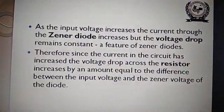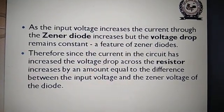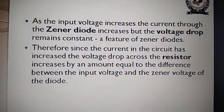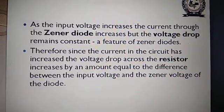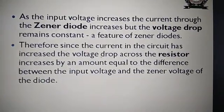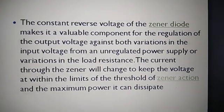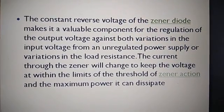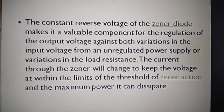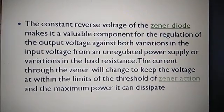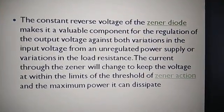As the input voltage increases, the current through the Zener diode increases, but the voltage drop remains constant — this is a key feature of the Zener diode. Since the current in the circuit has increased, the voltage drop across the series resistor increases by an amount equal to the difference between the input voltage and the Zener voltage. The constant reverse voltage makes the Zener diode valuable for regulating output voltage against both input voltage variation and load resistance variation.